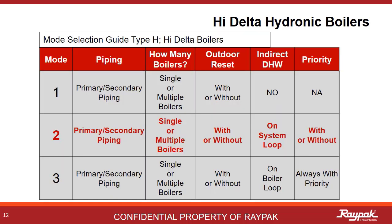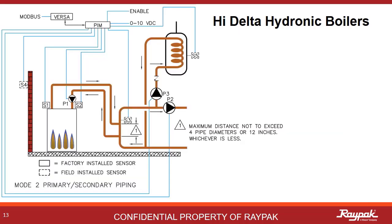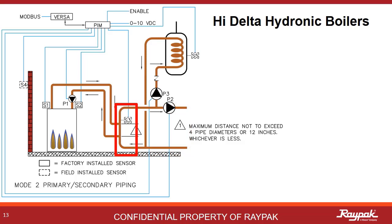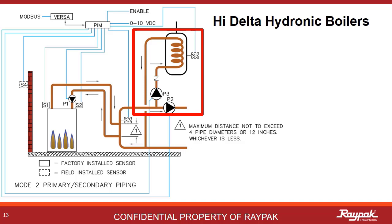Moving on to the Mode 2 discussion. What makes a Mode 2 a Mode 2 is the presence of an indirect potable water system on the system loop. In Mode 2 primary-secondary, you still have the two loops — the boiler loop and the system loop. The decoupler is still there to pressure-isolate the two loops. What makes this a Mode 2 is the addition of an indirect domestic hot water heat exchanger tank on the system loop. A more detailed explanation can be found on the High Delta Part 2 Wages Approach video.